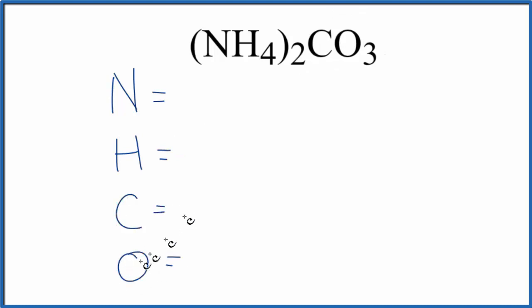So for nitrogen there's nothing written after it, so we're going to assume the subscript is one. But this two applies to everything in parentheses, so two times one gives us two nitrogen atoms, two times four, eight hydrogen atoms.